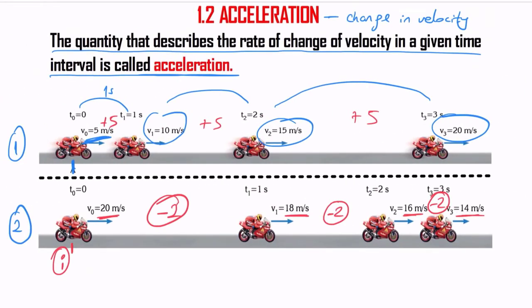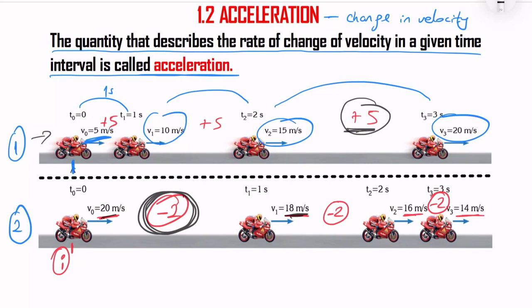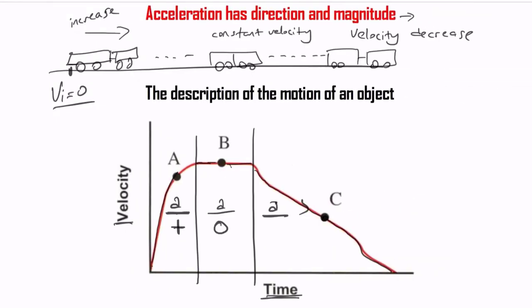Looking at the picture showing increasing velocity, the acceleration is positive. In the picture showing decreasing velocity — 20, 18, 16, 14 — the acceleration is negative. Scientists call this deceleration. So if we have a decrease in velocity, the acceleration is negative.